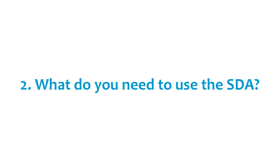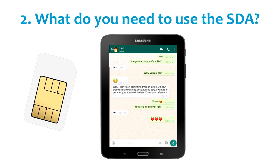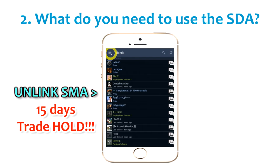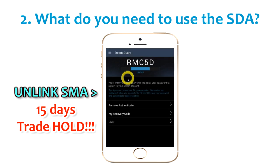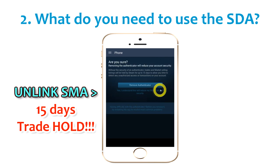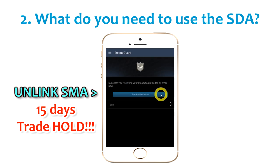Now, what do you need to use the desktop authenticator? The only thing you need is a mobile phone with a phone number for just five minutes to receive a text message from Steam. You could even borrow a mobile phone to receive the message. If you're using the Steam Mobile Authenticator you need to unlink it first before you can use the Steam Desktop Authenticator. Unlinking your account will give you a 15-day trade hold. You can avoid this trade hold, but I will explain that later in the chapter on how to transfer your SMA to SDA.